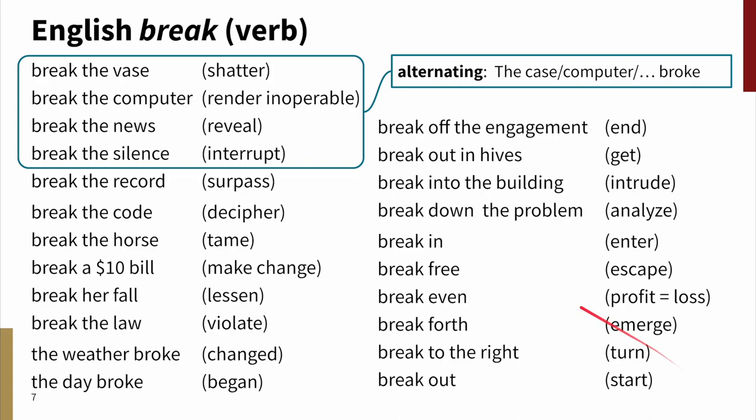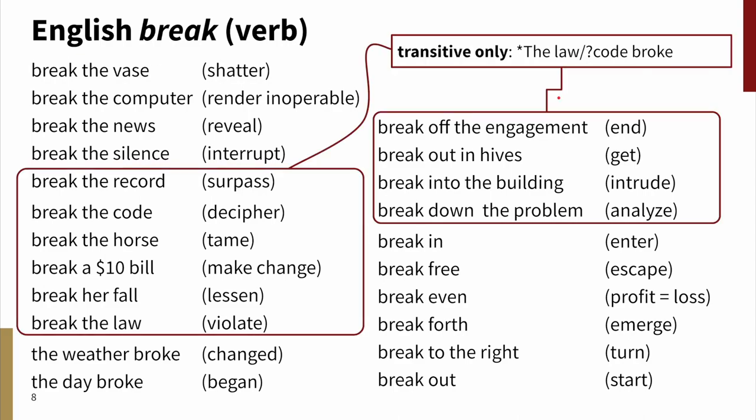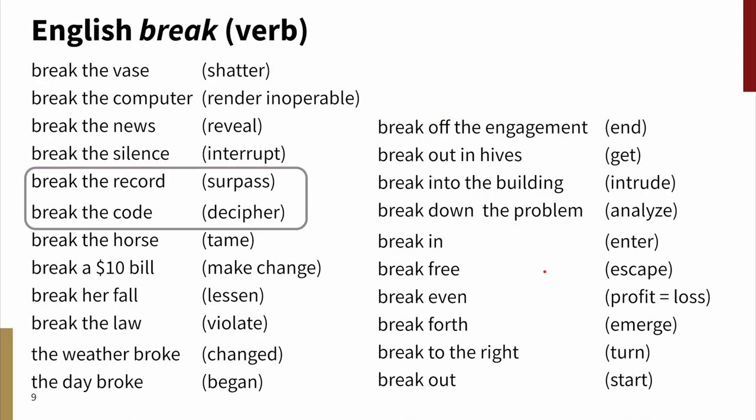Or more generally, which versions are obligatorily transitive, which are obligatorily intransitive, and which allow for alternations between the two. For example, the uses in this first block are alternating. Alongside the transitive cases we've listed, we have intransitive ones like the vase broke, the news broke, and the silence broke. In the next block, we have the transitive only cases. For example, you can't say the law broke or the $10 bill broke. If you reflect on your intuitions, you might feel some uncertainty around the boundary here for cases like the record broke and the code broke. Don't worry, that's natural. We'll return to that later.